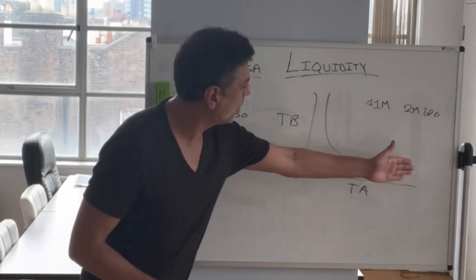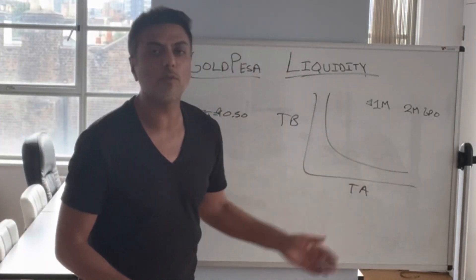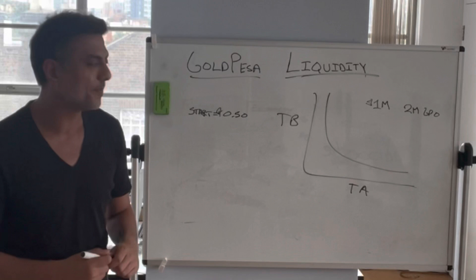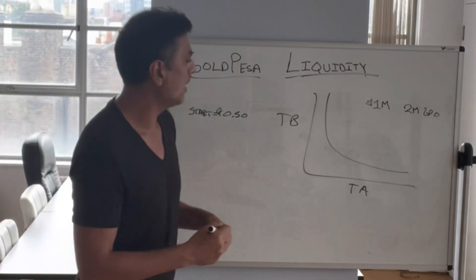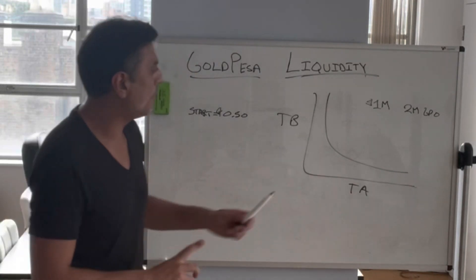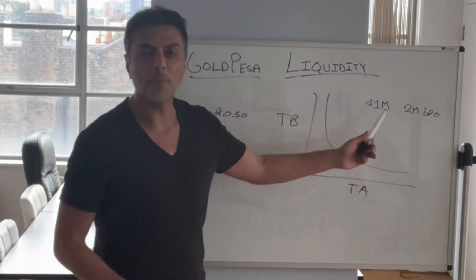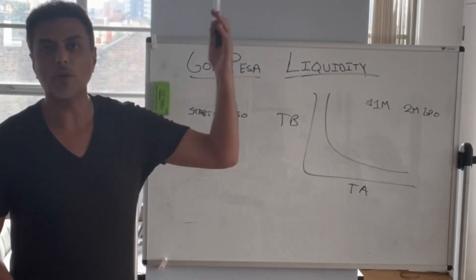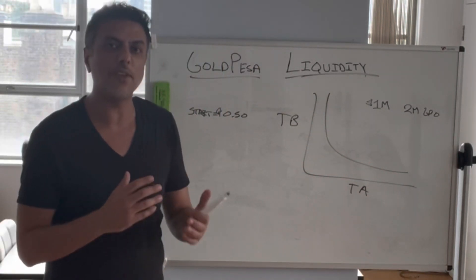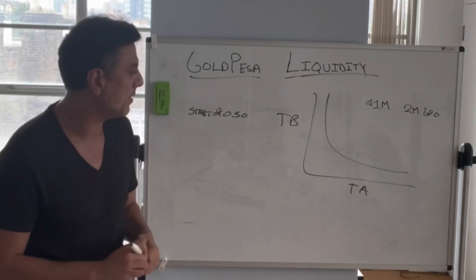And we would follow the same pricing model from zero to infinity. So that means that if you buy up 2 million GPOs, the price of GPO will go to infinity. And that's really thin liquidity for what we're trying to achieve.